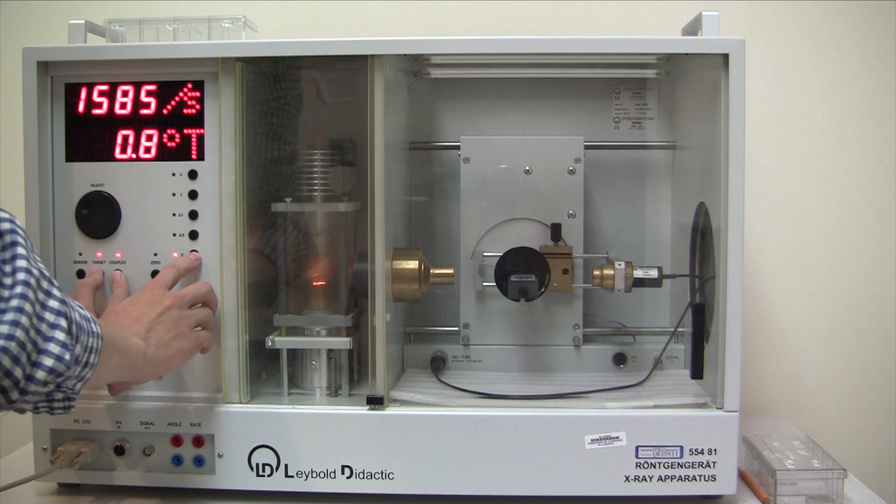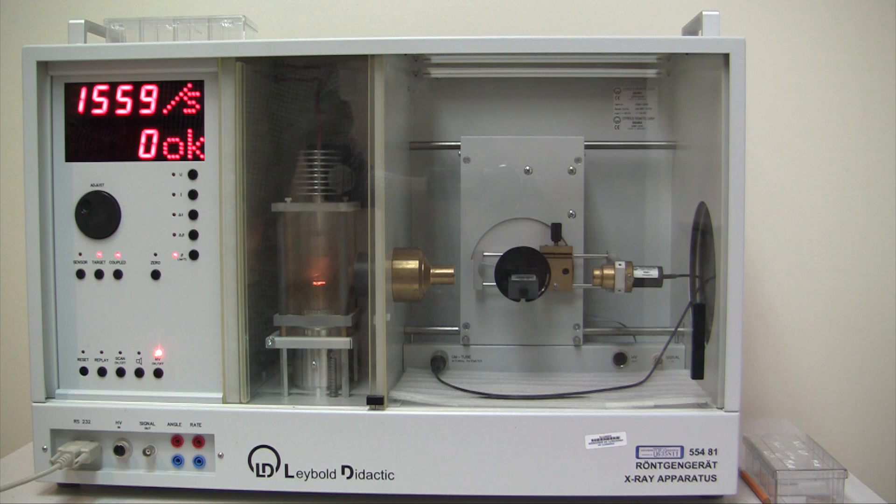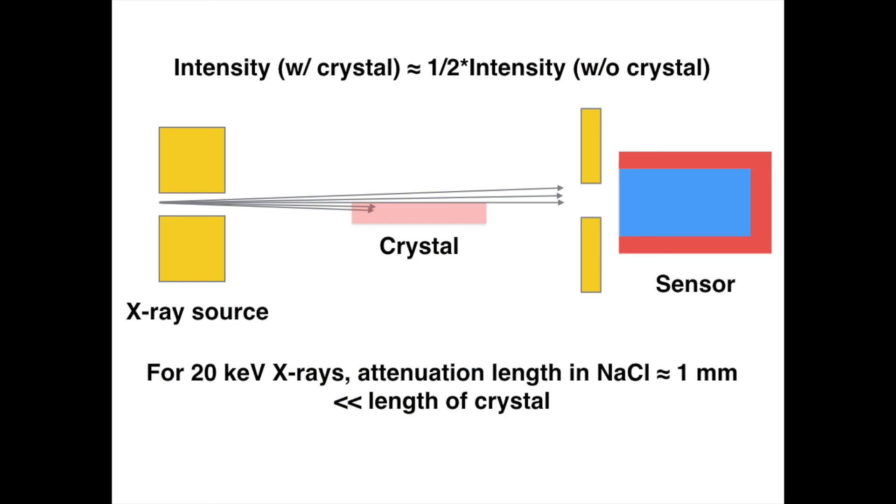Simultaneously depress the target, coupled, and the beta limits buttons. This should initiate the recalibration sequence and move the goniometer to 0 position. Consider when the source, the crystal and the sensor are perfectly aligned with each other. With the crystal in place, most of the X-rays that hit the crystal cannot pass through, due to the fact that the attenuation length of the X-ray is much smaller than the length of the crystal. Therefore, compared to the case without the crystal, the intensity received by the sensor reduces to about half.